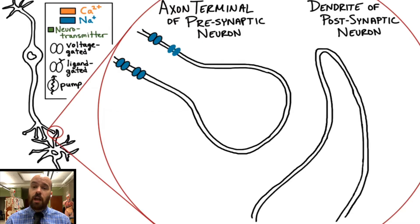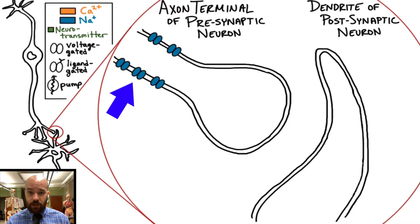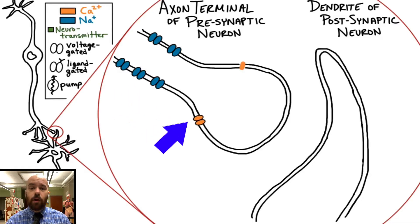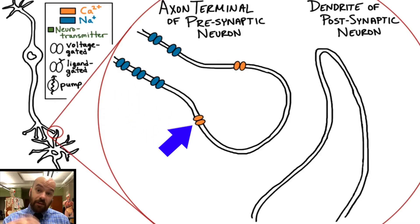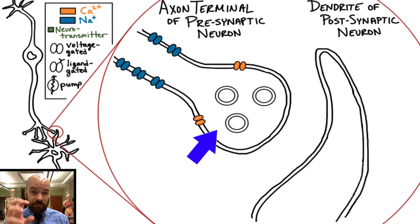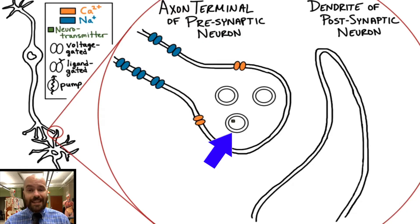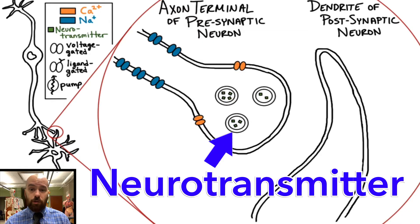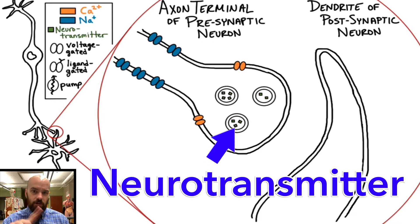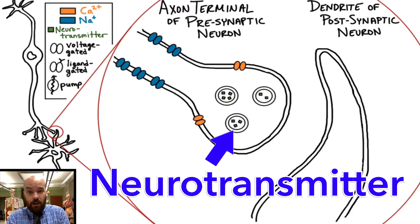Starting with the presynaptic neuron, we're going to have voltage-gated sodium channels lining the axon of the neuron. Just distal to those, closer to the terminal, we're going to have voltage-gated calcium channels. Inside the axon terminal, we have little spheres called vesicles, and inside those vesicles are neurotransmitters. That term neurotransmitter just means nerve transmitter — to carry information. These are going to carry information onto the postsynaptic neuron.